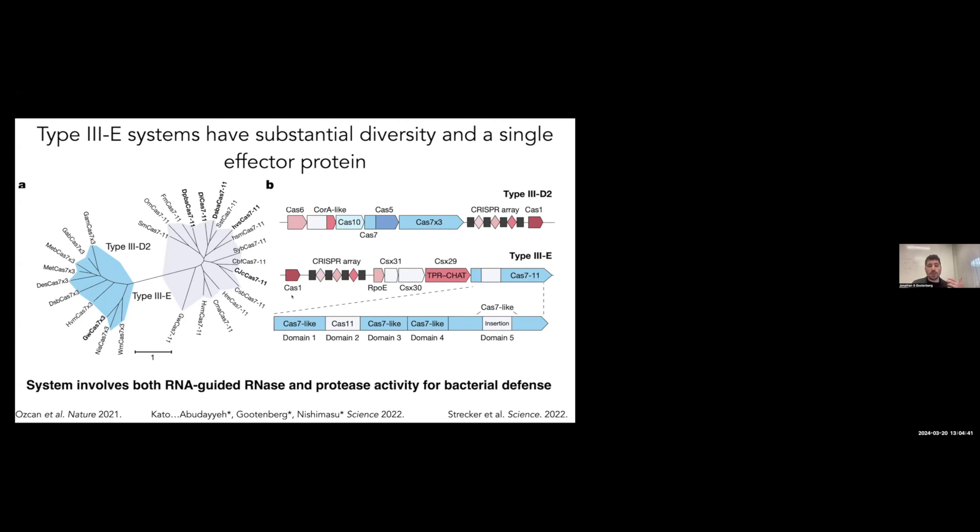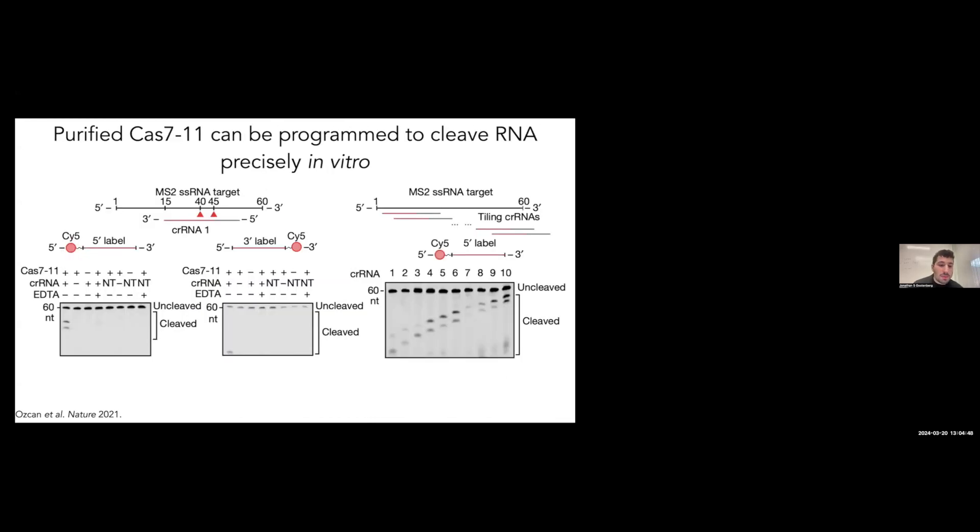Just to illustrate that, we purified Cas7-11 in collaboration with Eugene Koonin and we found that we could actually get precise targeting in vitro, both with a 5' and 3' prime labeled constructs. Then we could actually tile guides along the construct to find different areas of targeting. You can see we're tiling CRISPR RNAs from one end to the other, and we could see that cut site move across the RNA on that gel.